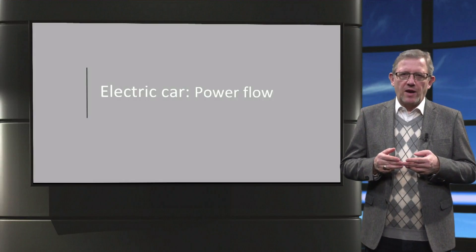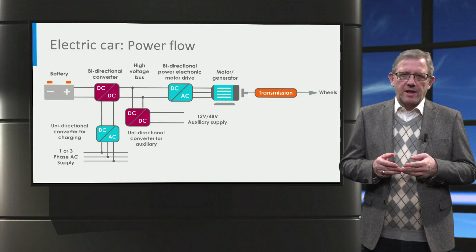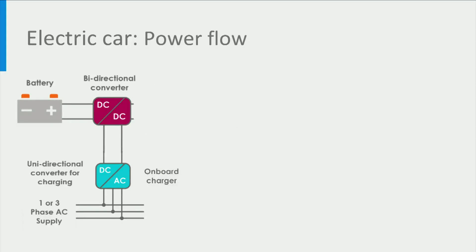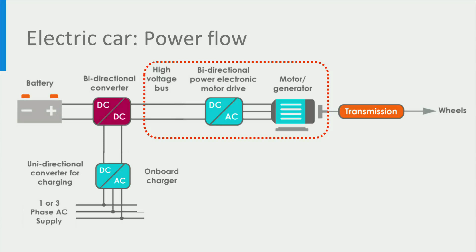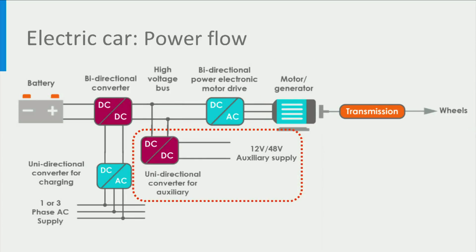Now that we know the different parts of the electric vehicle, let's have a look at how the electric vehicle operates based on the electrical power flow. This figure shows the typical electrical layout of the components in an electric car as seen earlier. The power is delivered from the AC grid to charge the battery via the on-board AC-to-DC rectifier and DC-to-DC battery converter. When the car is in driving mode, the power provided by the battery goes through the DC-DC converter to the high voltage DC bus. Then the DC-to-AC inverter of the motor drive sends the power to the motor. The motor then converts the electrical energy to mechanical energy and it is sent to the wheels via the transmission. Further, a DC-to-DC unidirectional converter steps down the voltage from the high voltage DC bus to charge the auxiliary battery, which in turn powers the electric vehicle accessories.